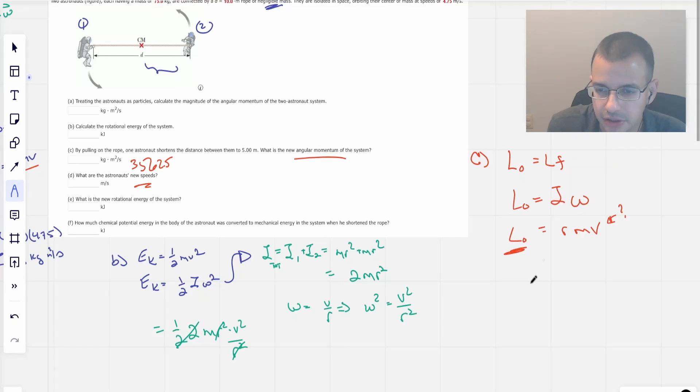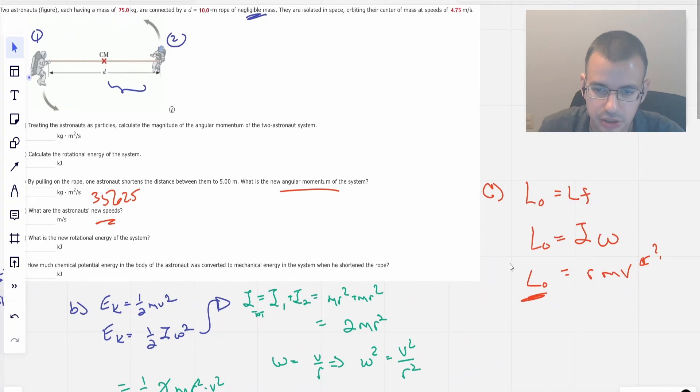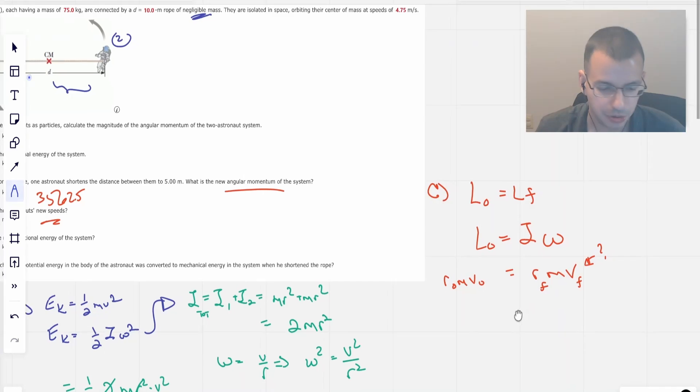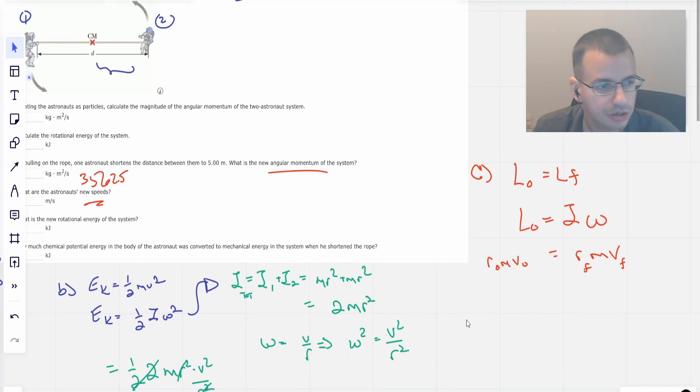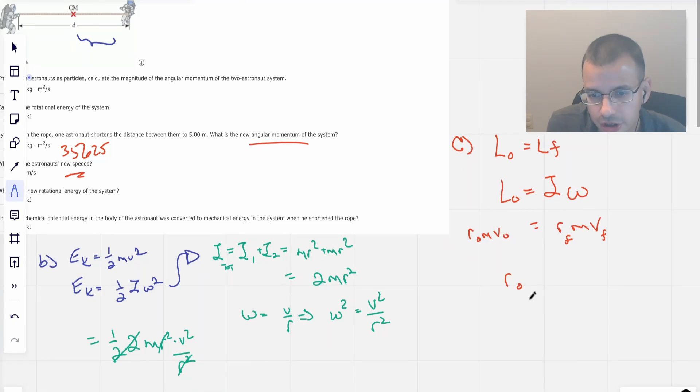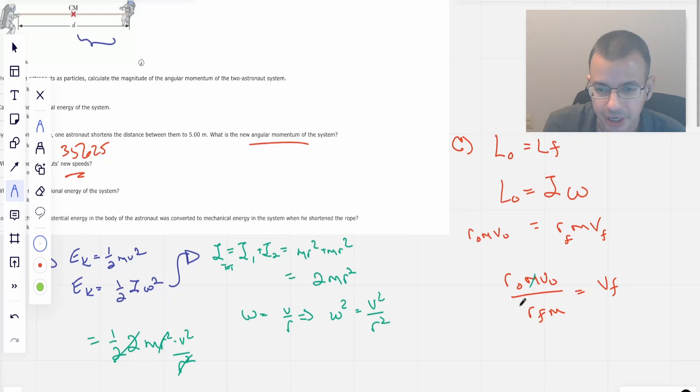Actually yes, I'm going to write out the initial angular momentum as R initial, M, V initial equals R final, M, V final. Same thing. I'm just hoping things will cancel out. And I'm not using the initial 35625 as our data point. So then solving this, we get R naught, M, V naught over R final equals V final. M is the mass of the astronauts, and it's the mass of both astronauts together, but it doesn't matter because that cancels.